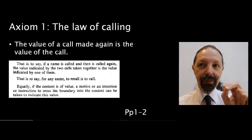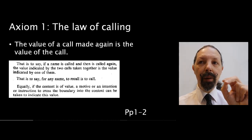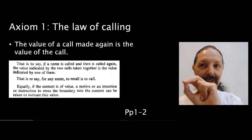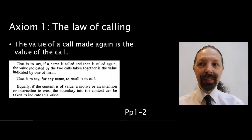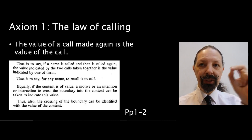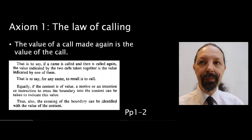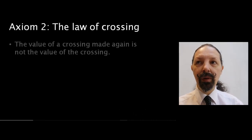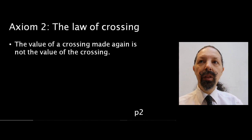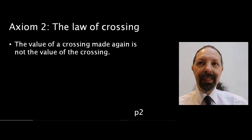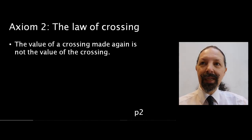And if the content is of value, a motive or an intention or instruction to cross the boundary into the content can be taken to indicate this value. The crossing can be identified with the value of the content, which takes us into the law of crossing. And the law of crossing states that the value of a crossing made again is not the value of the crossing.